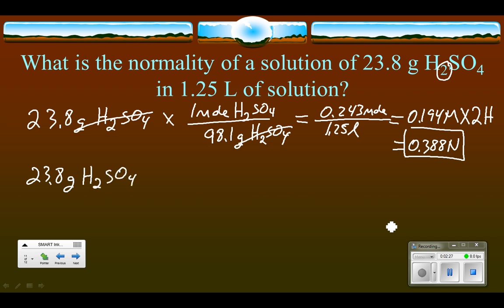But now we're going to do something different at this point. We're going to change it not to moles, but to equivalents. And so one equivalent is equal to the molar mass divided by the number of hydrogens. So again, it's still 98.1 grams for the molar mass. But now we just take that and divide that by the two hydrogens.